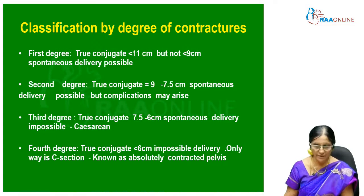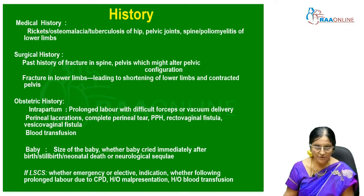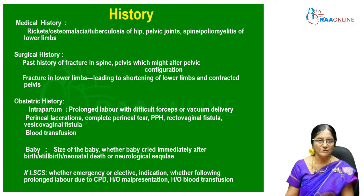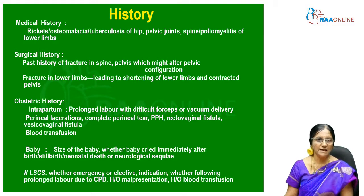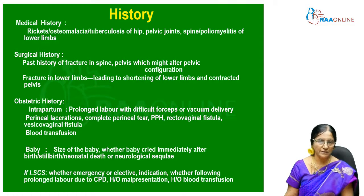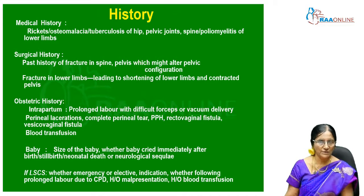When a patient comes to you, a detailed history should be taken. Medical history should record osteomalacia, tuberculosis of hip, pelvic joints, spine, poliomyelitis. Surgical history includes fracture of the spine or pelvis which can alter pelvic configuration, fracture in lower limbs leading to shortening and a contracted pelvis. Obstetric history: if she has delivered previously, note intrapartum prolonged labor, difficult forceps or vacuum delivery, perineal laceration, PPH, rectovaginal fistula, or vesicovaginal fistula.